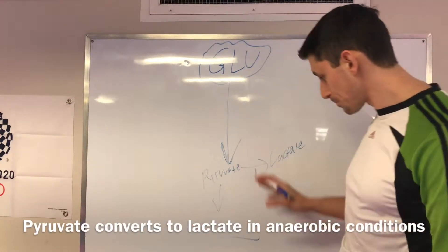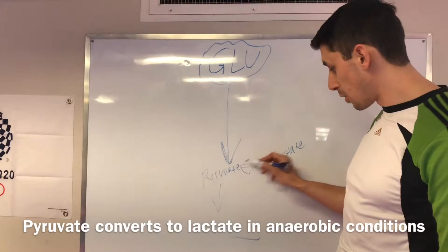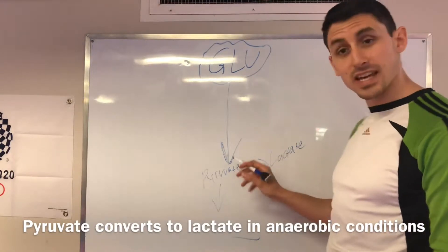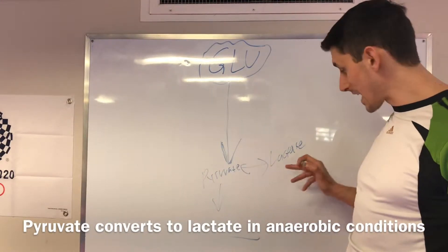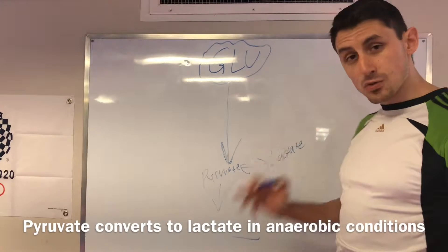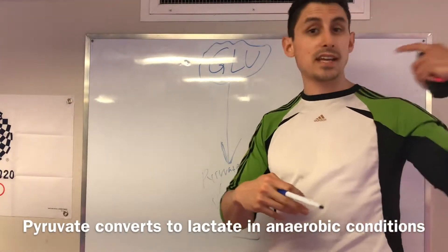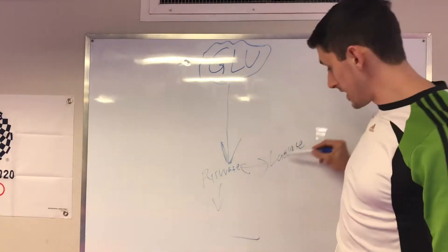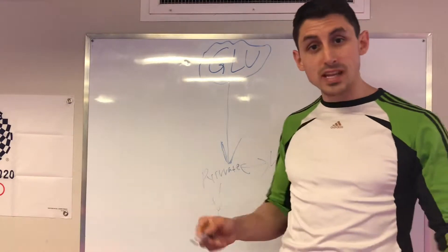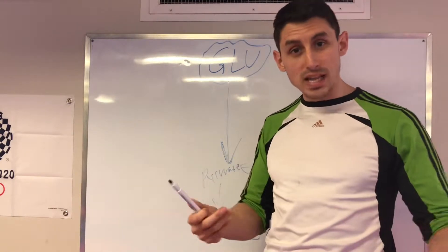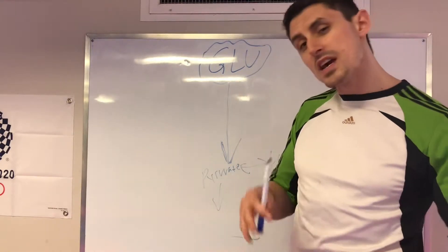This process can actually go both ways — lactate can turn back into pyruvate, and pyruvate can turn into lactate. But as we exercise, if we're exercising at a high enough intensity, this is going to start to accumulate in the blood. Blood lactate is going to elevate, and that's going to affect performance.